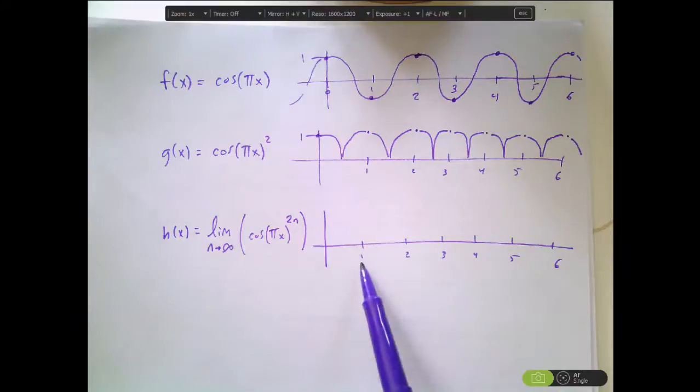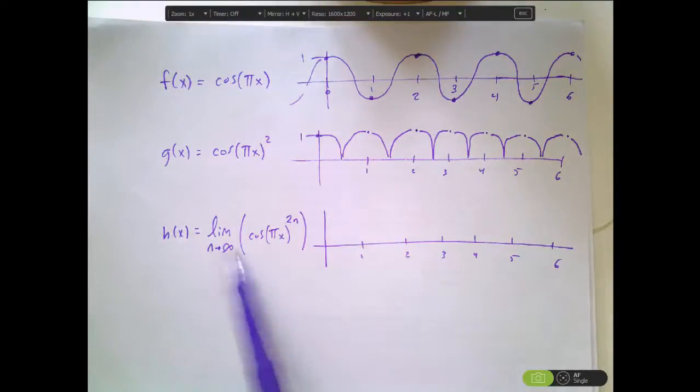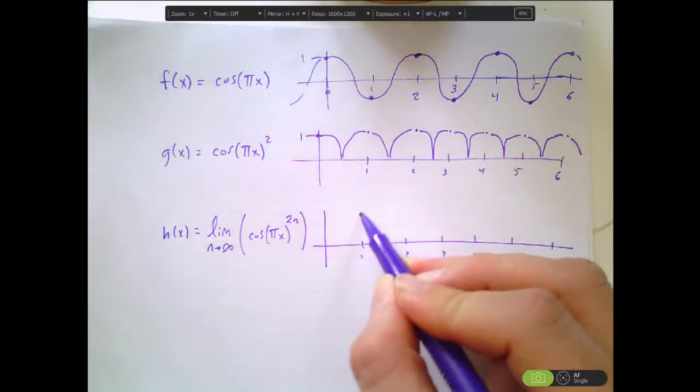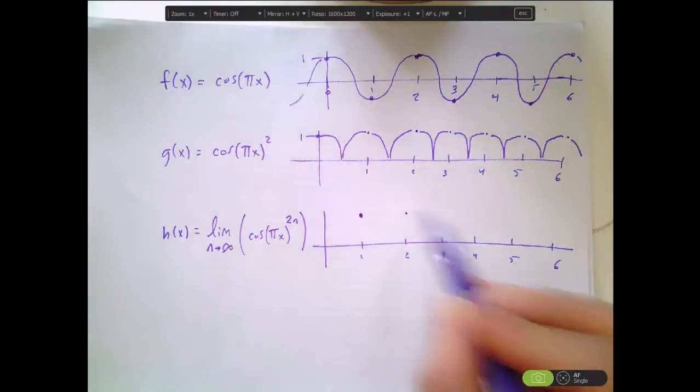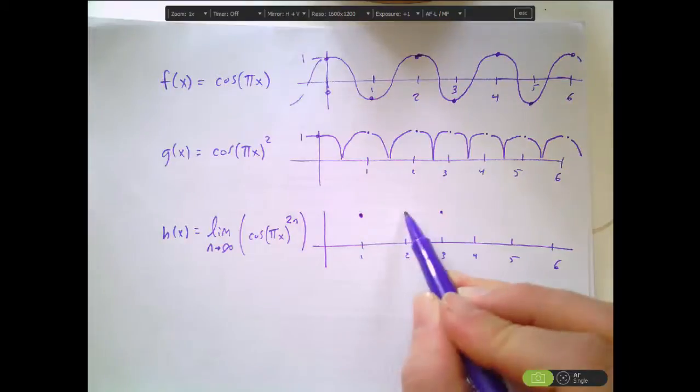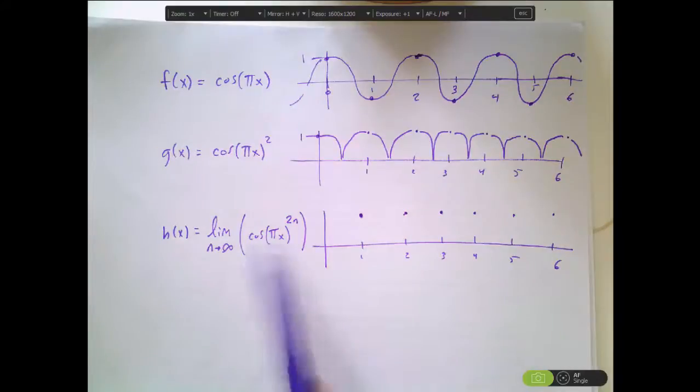For example, if I choose x = 1, cosine of π is going to be 1. I'll square it, still 1. So it doesn't matter as n approaches infinity, I'll just have 1 times itself, so that will be 1. I hope you can see that the same thing will be true for any of these other integer values, because whenever x was an integer, that was exactly when this inner part was equal to 1. As I said before, you can raise 1 to itself as many times as you'd like, and it will never change value.